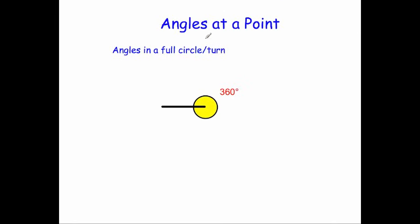In this video we're going to look at angles at a point. This is sometimes called angles in a full circle or angles in a full turn, and the angles at a point will always add to 360 degrees. So let's have a look at some typical questions now.